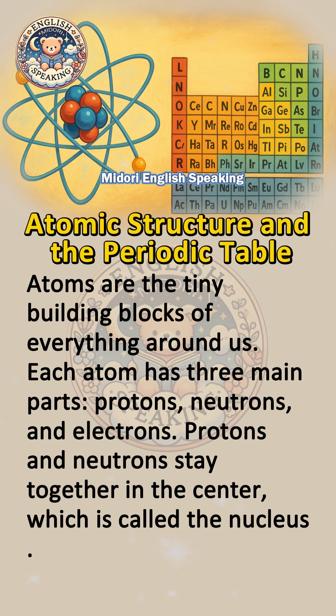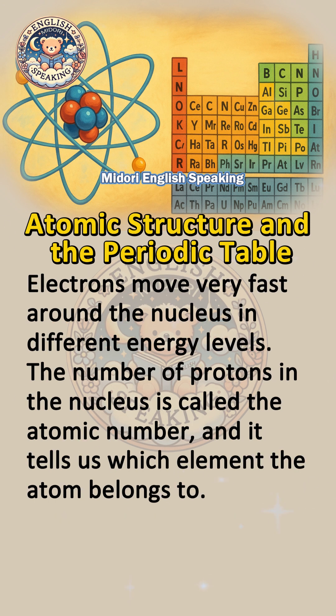Protons and neutrons stay together in the center, which is called the nucleus. Electrons move very fast around the nucleus in different energy levels.